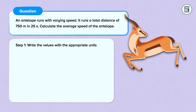Step 1: Write the values with the appropriate units. The question states that the total distance travelled by the antelope is 750 metres and the total time is 25 seconds.